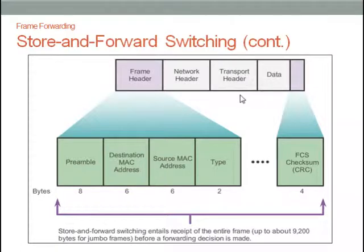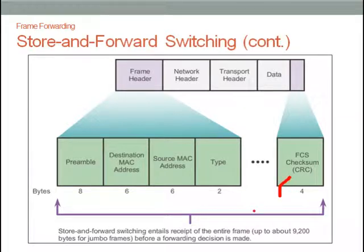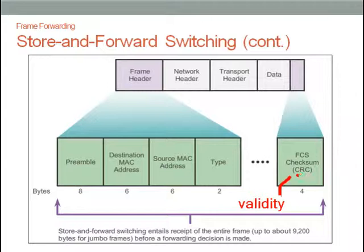Here is a graphical diagram of the data format for store and forward switching. The frame consists of a frame header and data, followed by an FCS checksum. The checksum is used to calculate the validity of the data. If the data is corrupted, the CRC will reflect the corruption so that the switch can request a resend of the frame.